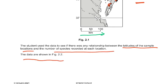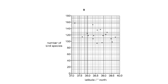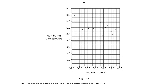Now here you can see the number of species. At latitude around 37.5 north, there doesn't seem to be any clear relationship. You can say a little bit that as the latitude increases, the bird species count doesn't seem to follow a clear pattern.